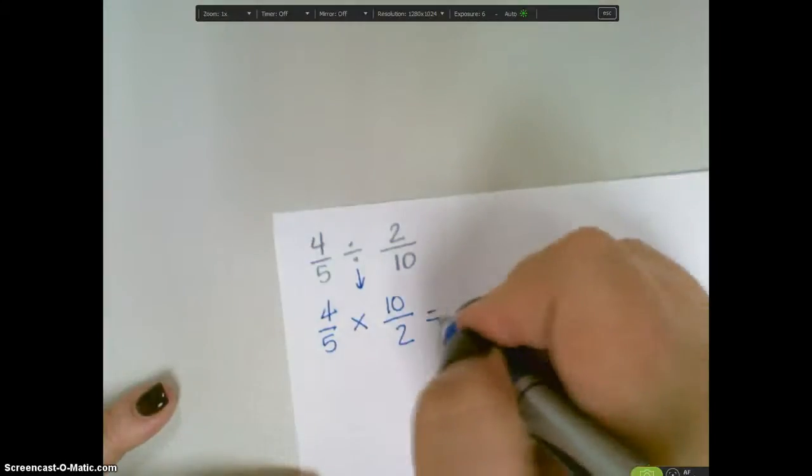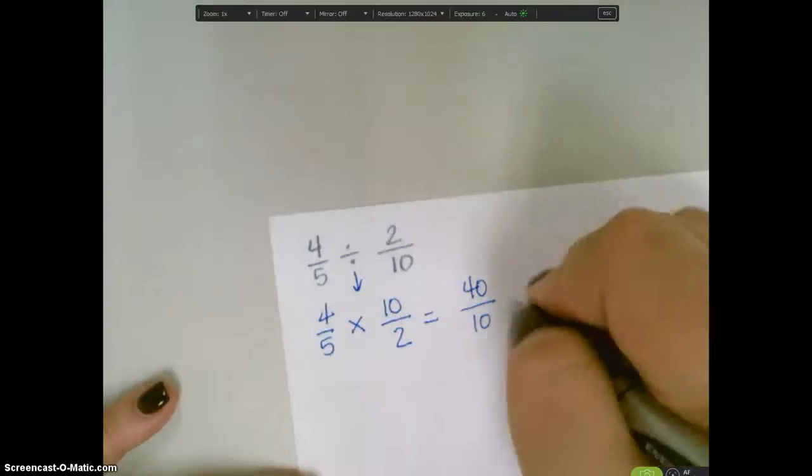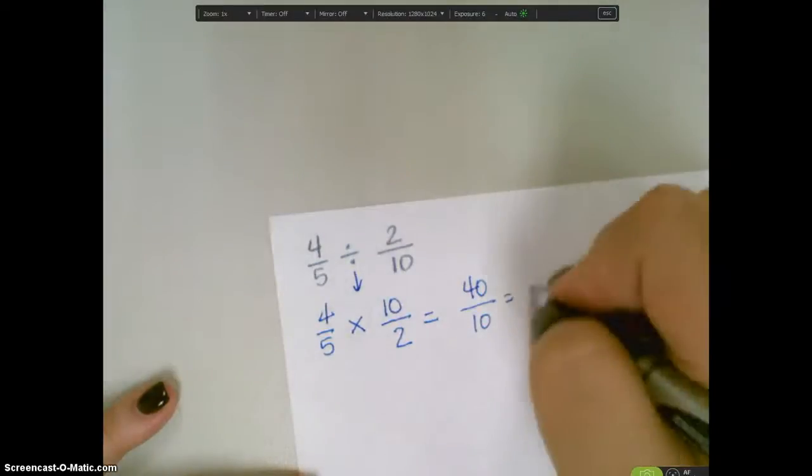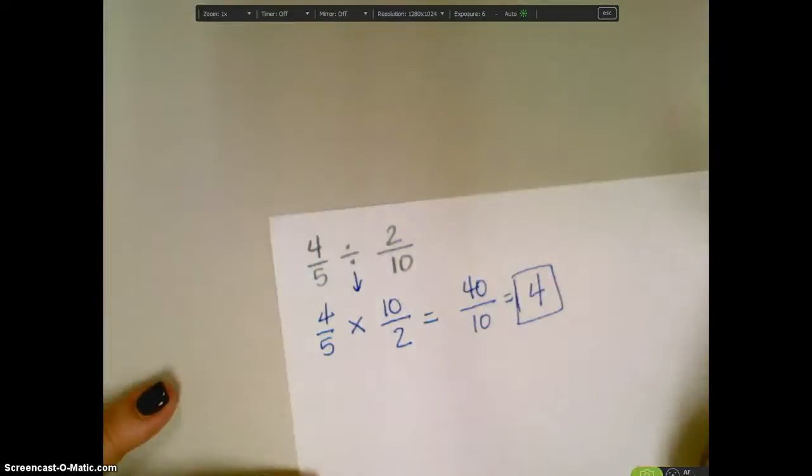At this point, I can multiply across, and I would get 40/10. Then I can simplify that to be 4. So 4/5 divided by 2/10 would be 4.